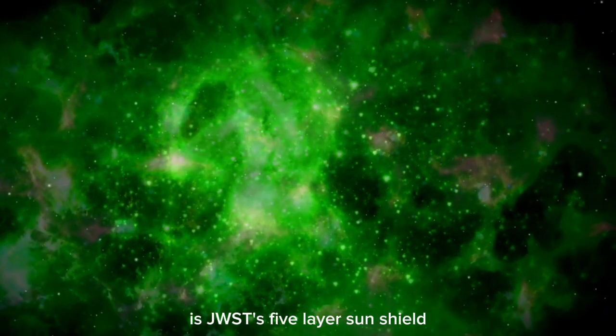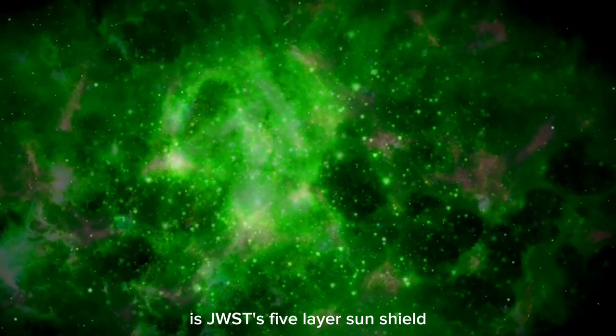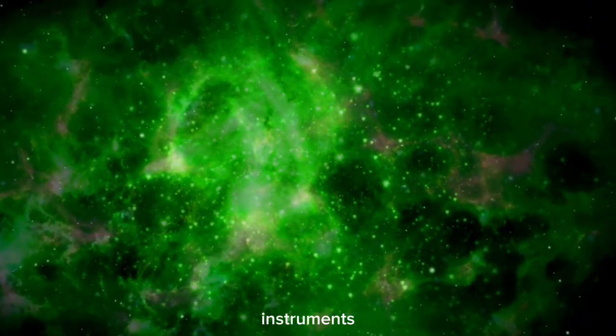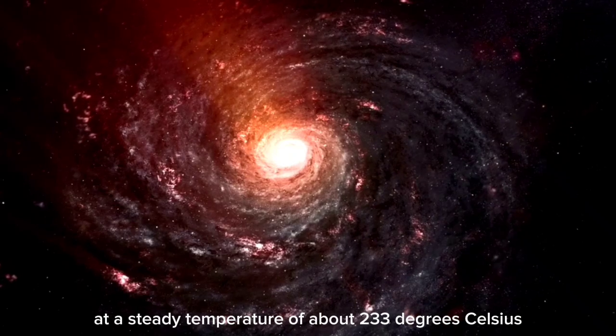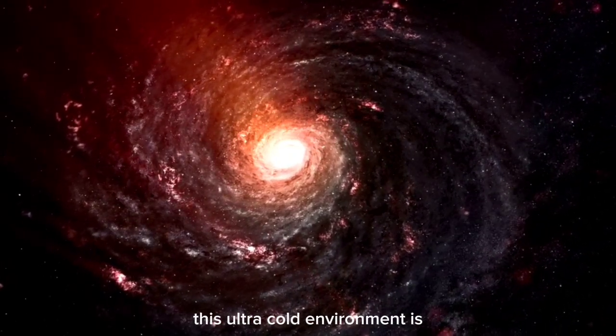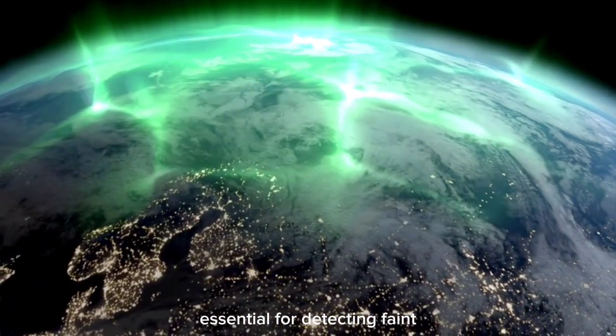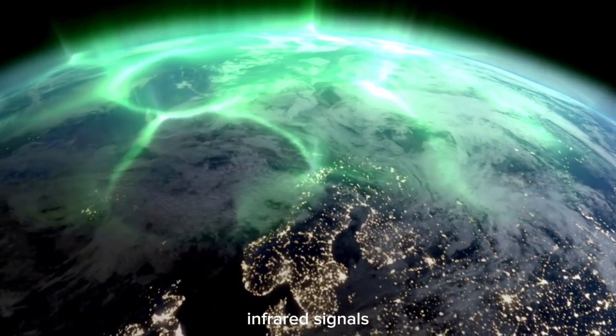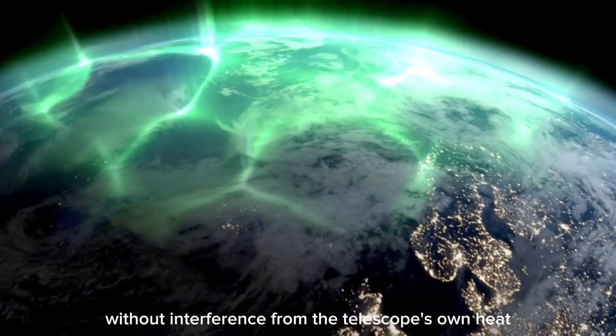Another remarkable development is JWST's five-layer SunShield, which keeps the telescope's instruments at a steady temperature of about negative 233 degrees Celsius. This ultra-cold environment is essential for detecting faint infrared signals without interference from the telescope's own heat.